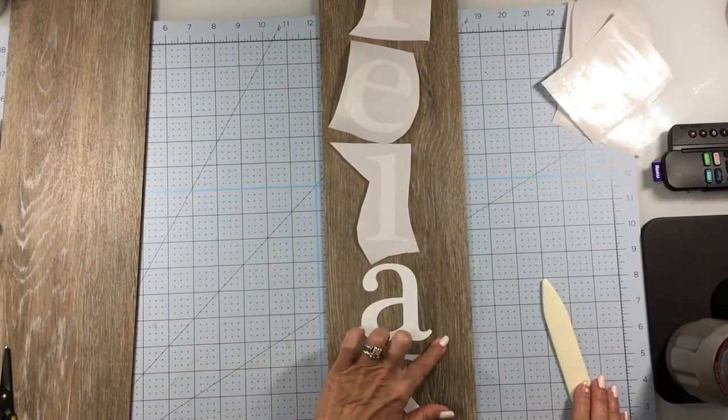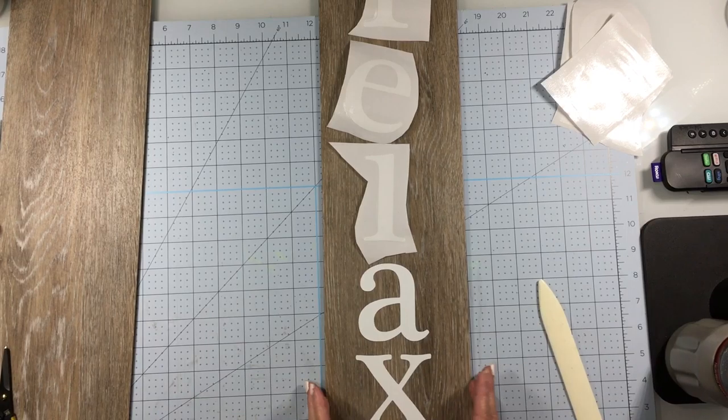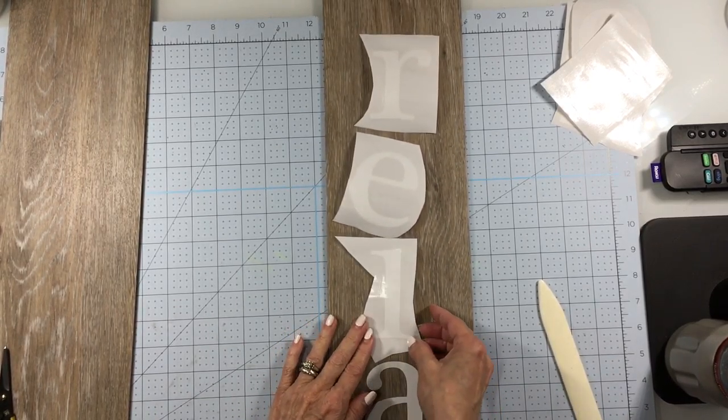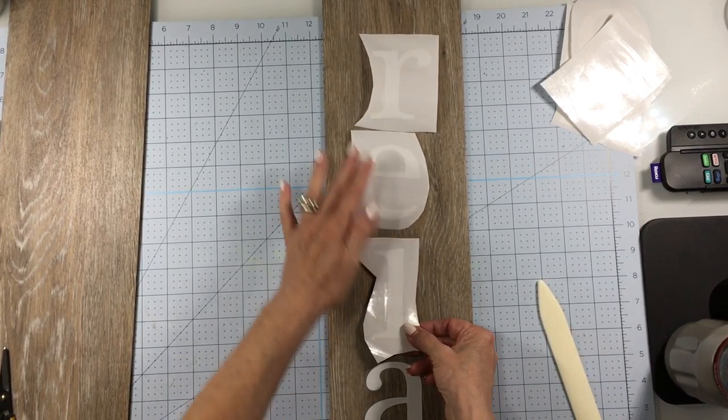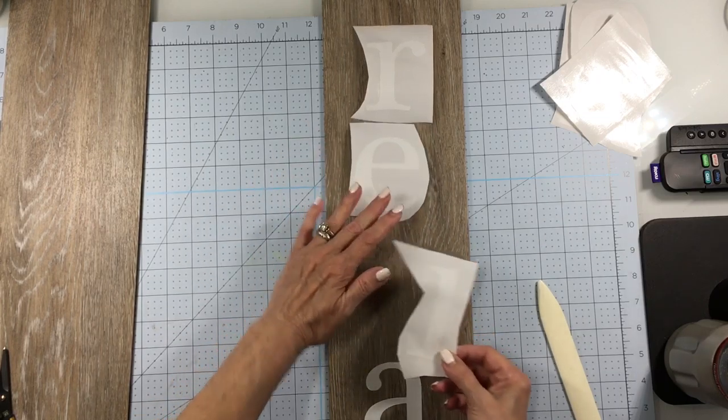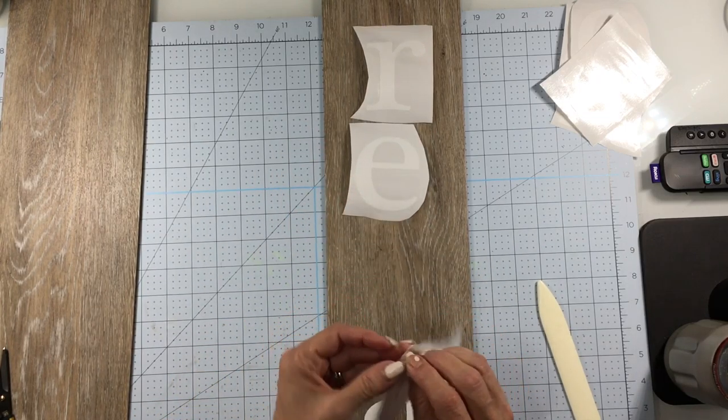As you can see, I already have two letters added and we're going to add the third one now. You would have laid your letters here to get your placement, so I'm going to peel this backing.